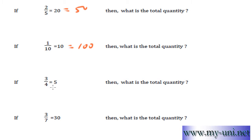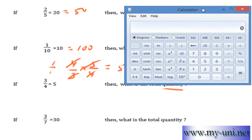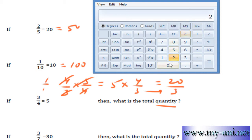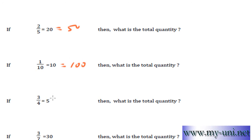3 fourths of a certain quantity is 5. Then what is the total quantity? Very simple, same thing. 3 over 4 is equal to 5. You have to convert this side of the equation to a whole quantity — to 1. Multiply it by the reciprocal fraction 4 over 3. And when you multiply this side by 4 over 3, you multiply the other side by 4 over 3 as well. So this 4 will cancel out, these 3s will cancel out, giving 1 whole quantity. 5 times 4 is 20, and 20 divided by 3 — I'll use a calculator to save time — is equal to 6.66. So the answer to this one is 6.66.